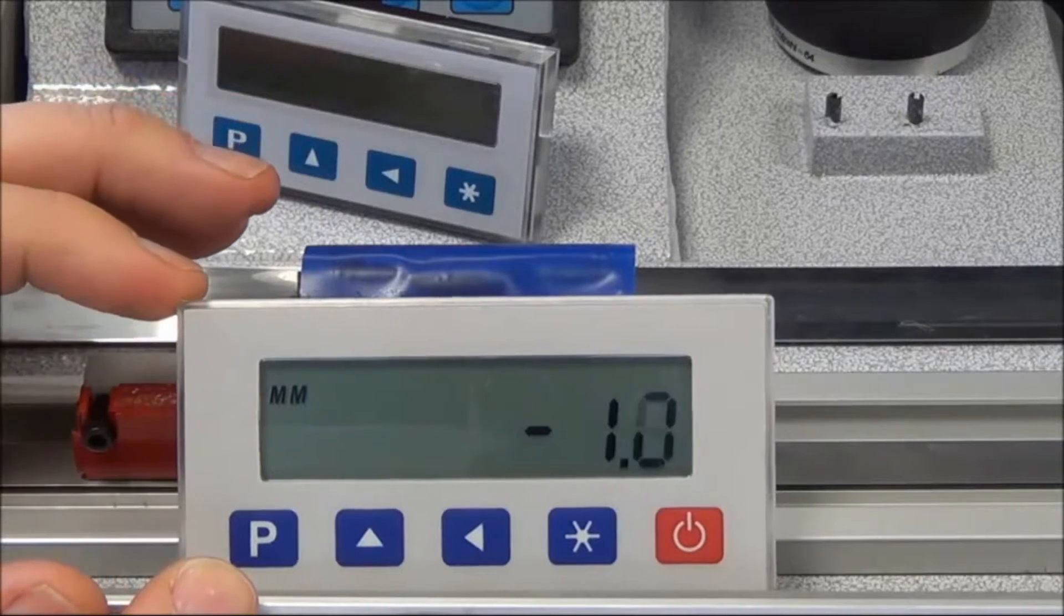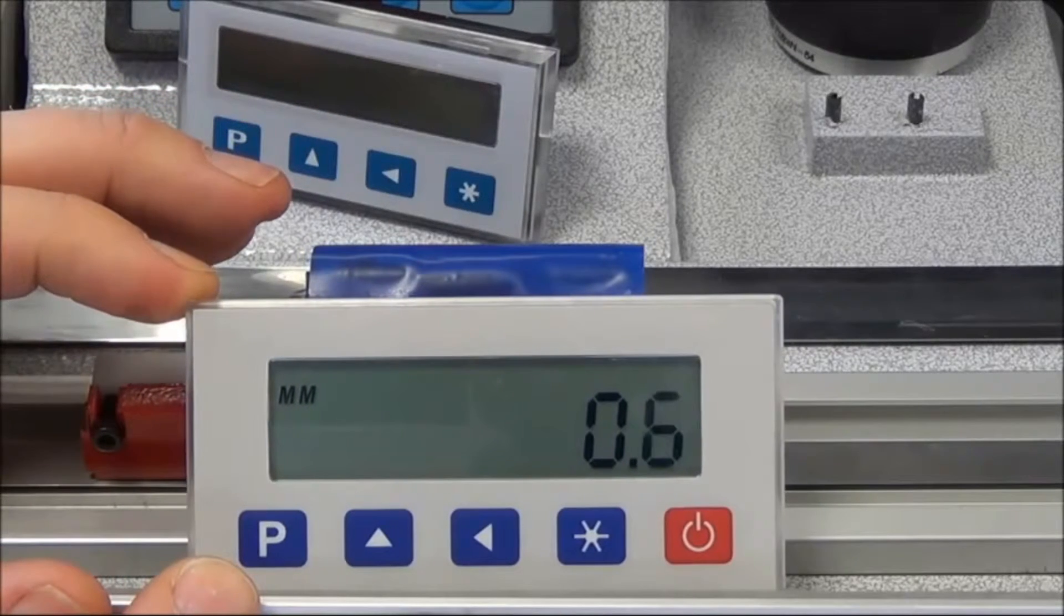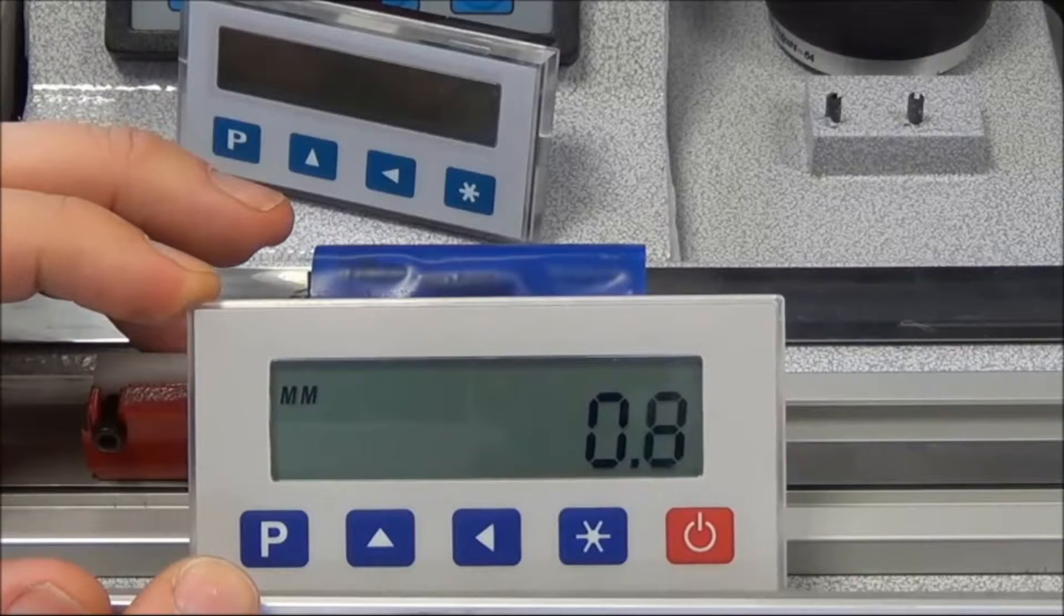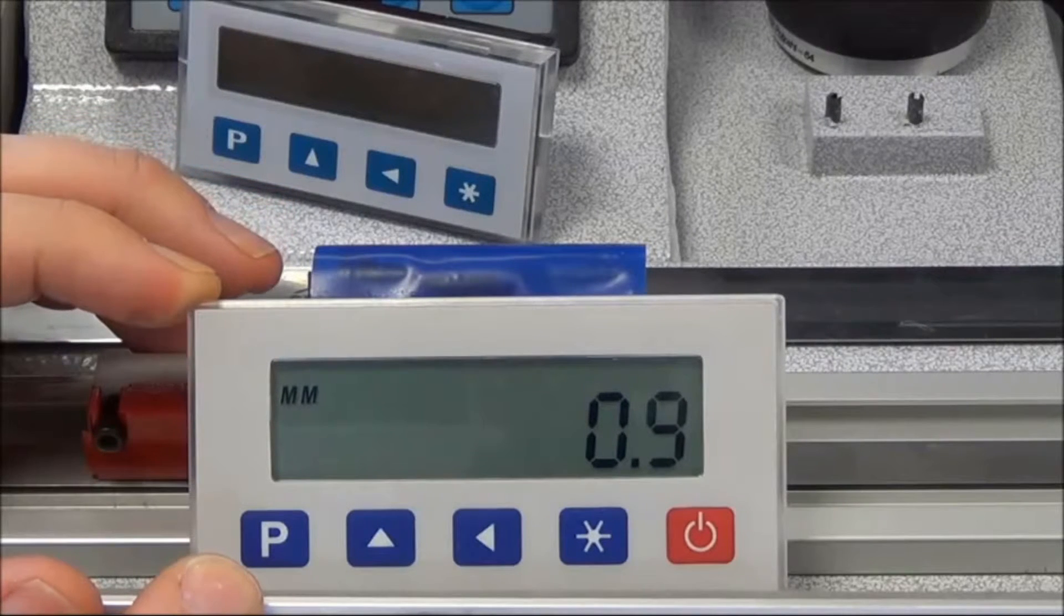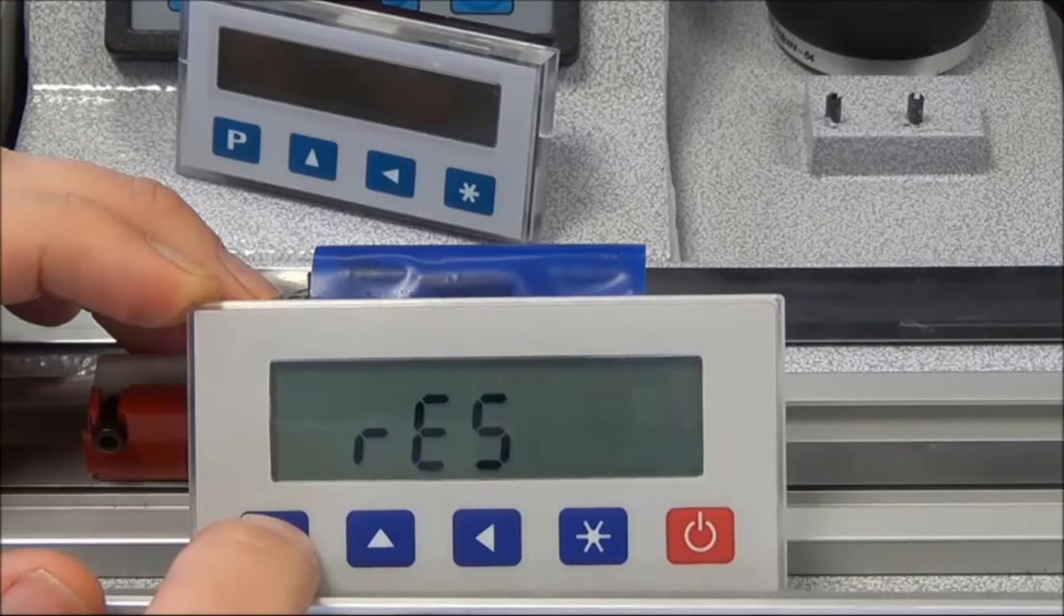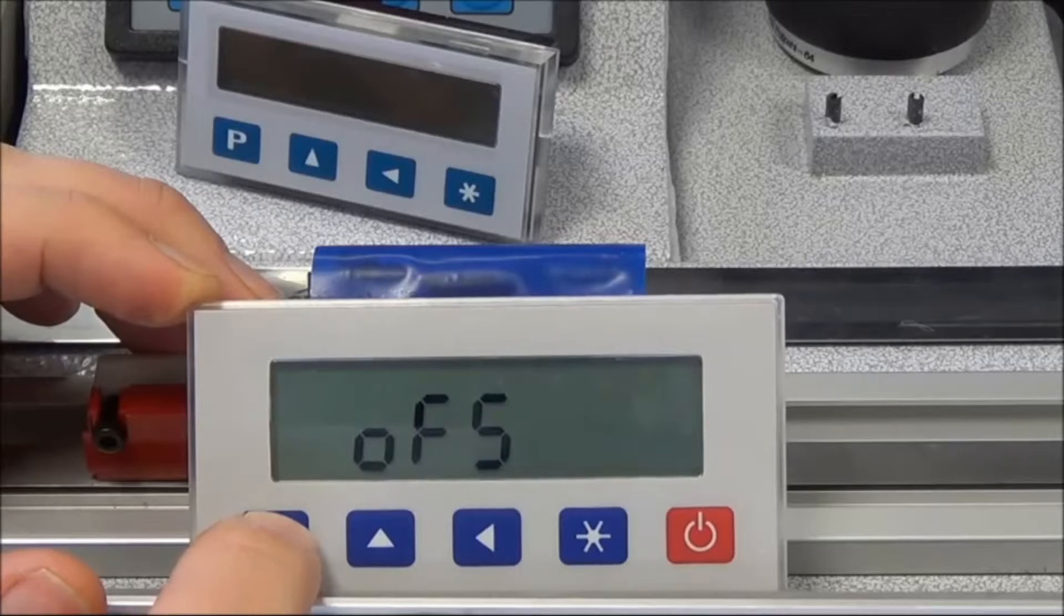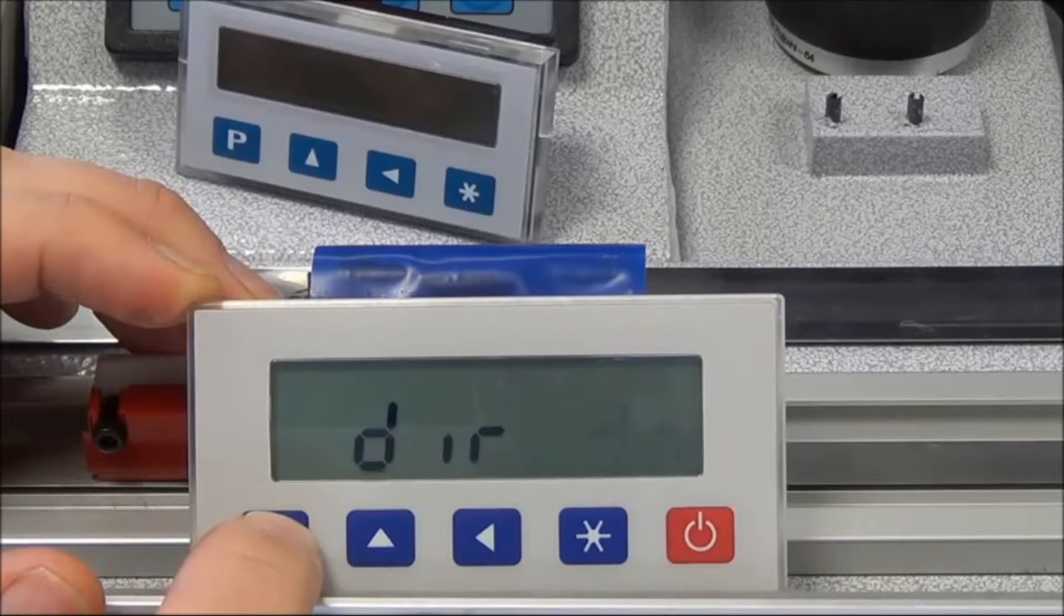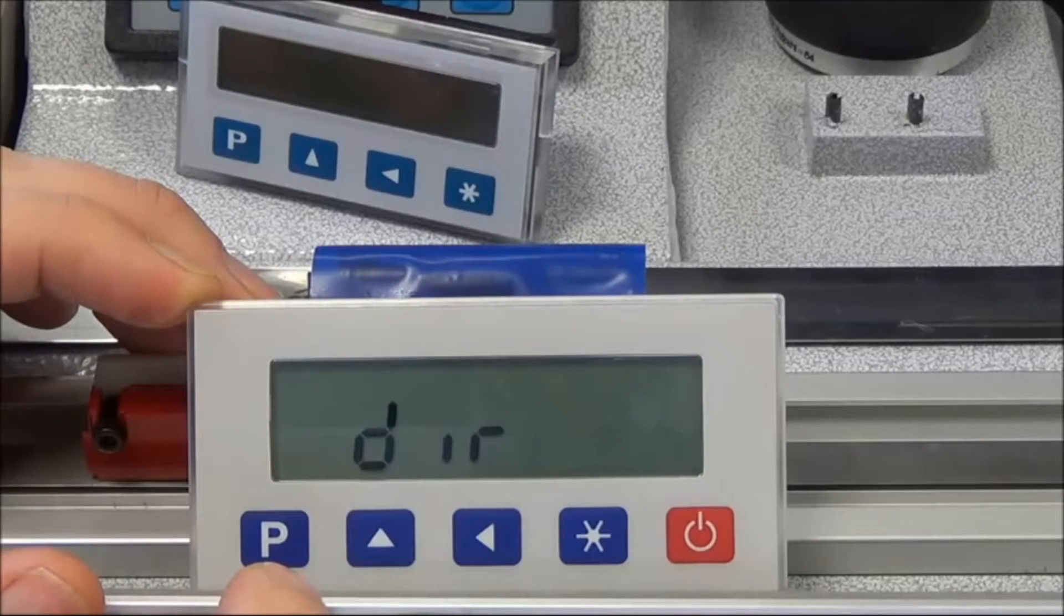So what we want to do is we want to change this because the customer's told us that the direction is incorrect. So enter into the programming, step down till you see the direction. Now it says DN for down.